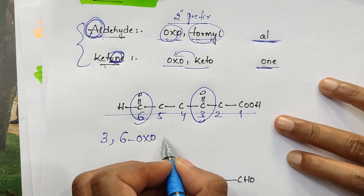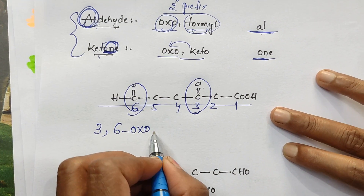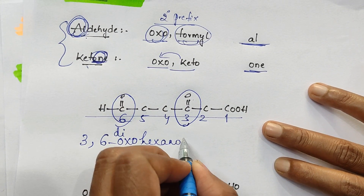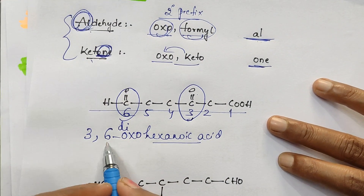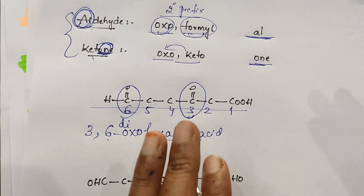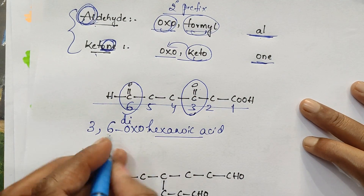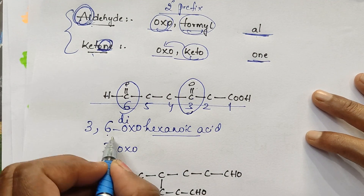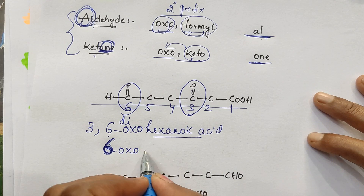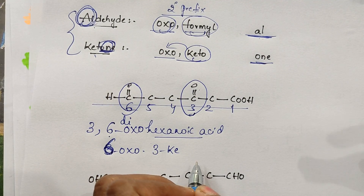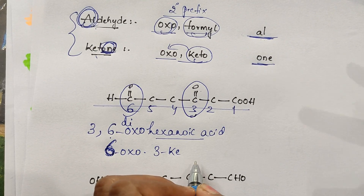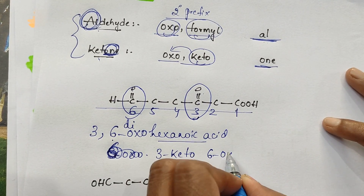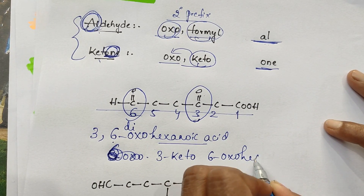If you are using oxo, then it is 3,6-dioxohexanoic acid. Or if you use keto for the ketone: as per alphabetical order, K comes before O, so 3-keto comes first. Its name is 3-keto-6-oxohexanoic acid. Both are correct.